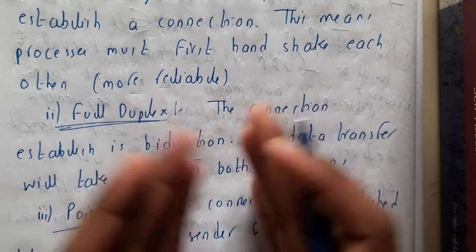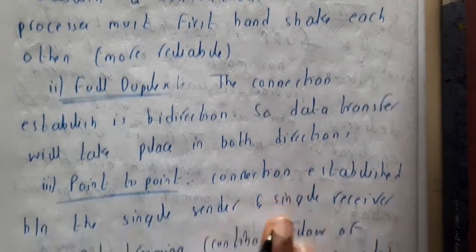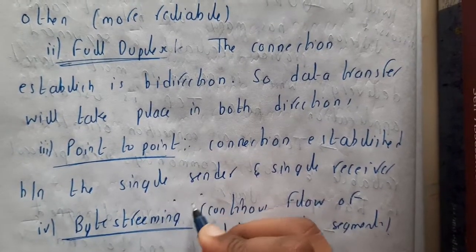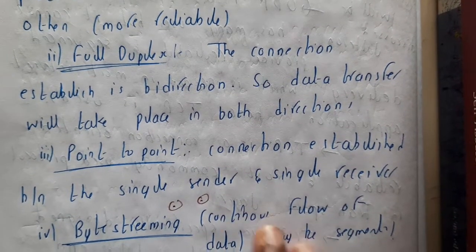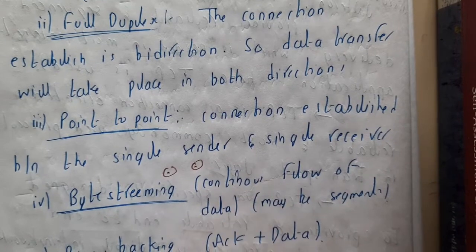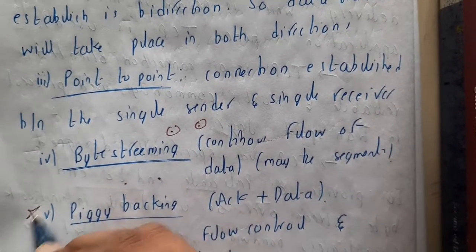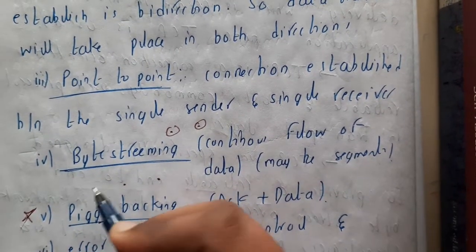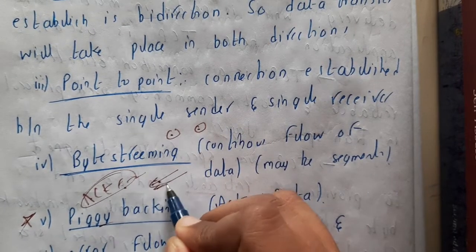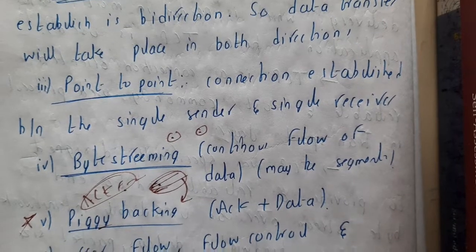Full duplexed: the connection established is bidirectional — both sides can transmit data or send acknowledgements; there is no restriction. Point-to-point: it goes from a single sender to a single receiver. Byte stream: a continuous flow of data from one to another. Piggybacking is also a very important concept — you can send acknowledgement plus data together instead of sending them separately.